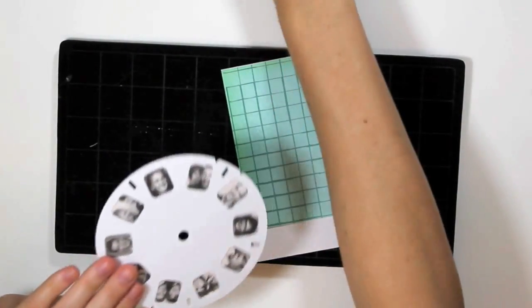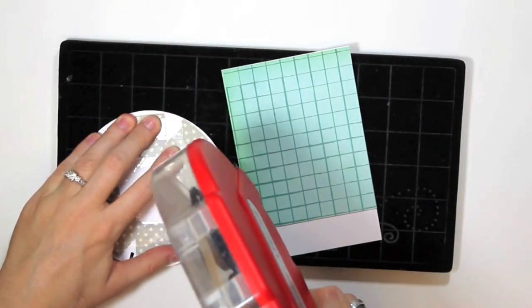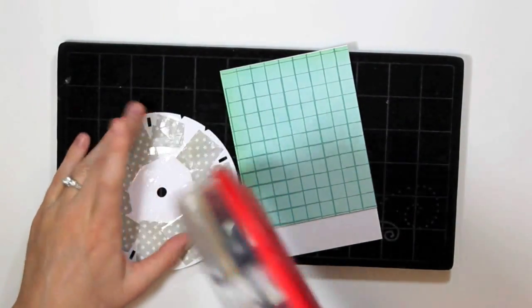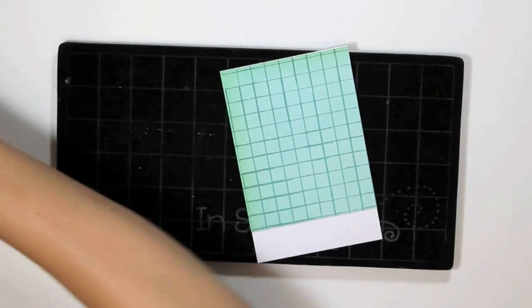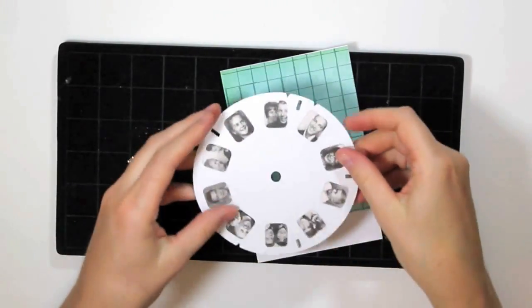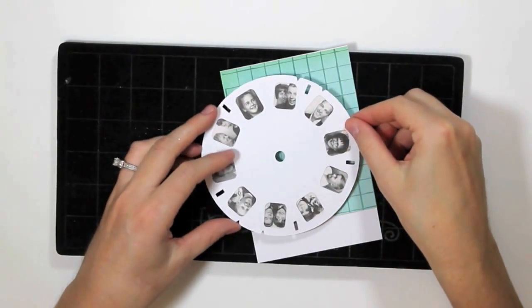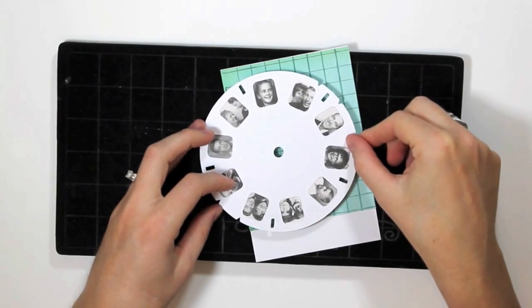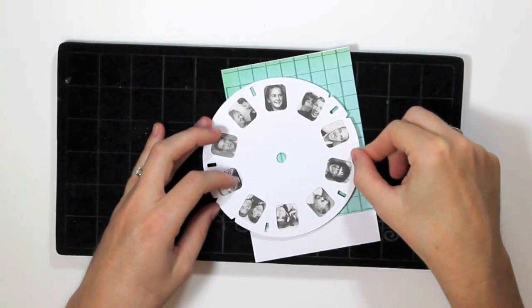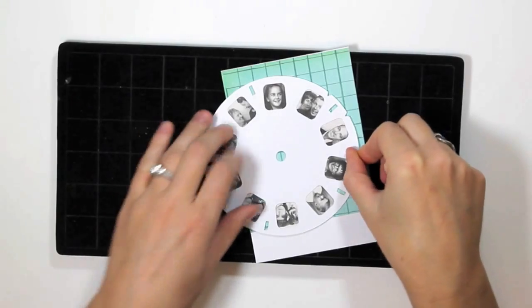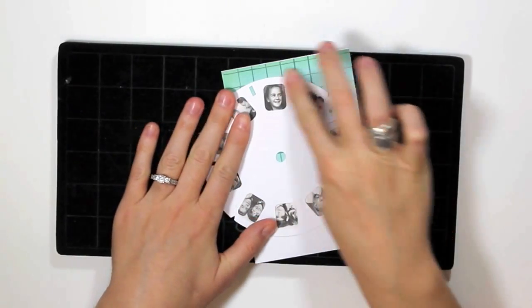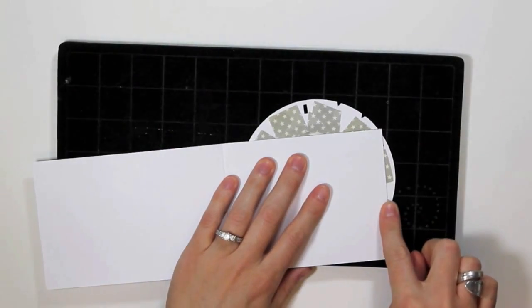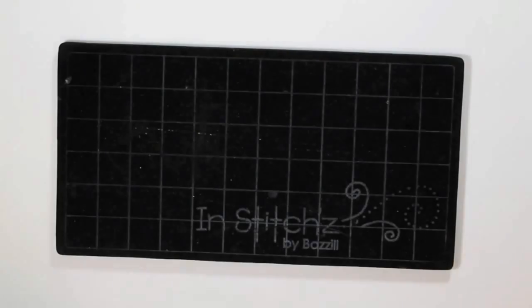It's time to adhere our die cut onto the front of the card, and part of the viewmaster image is going to extend beyond the sides of the card, so that part will have to be trimmed later. I'm just going to adjust the image until I get the photos. There are some particular photos that I just really wanted to include on the card, so once I find those and get a good placement, I'll go ahead and press that in place. As you can see, this is the overhang that I was talking about, so I'm just going to use my paper trimmer and cut that off.